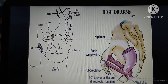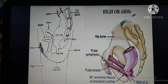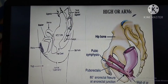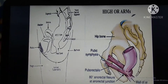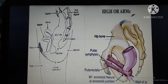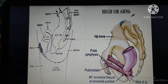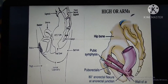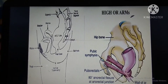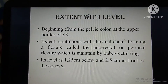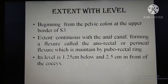In the diagram, the sacrum and coccyx are shown, and in front of them are the rectum and anal canal. This is the symphysis pubis — the attachment of the puborectalis muscle, which starts from the pubis, goes backwards and downwards around the rectum, and attaches back to the symphysis pubis. This muscle forms the anorectal flexure, whose level is 1.25 centimeters below and 2.5 centimeters in front of the coccyx.